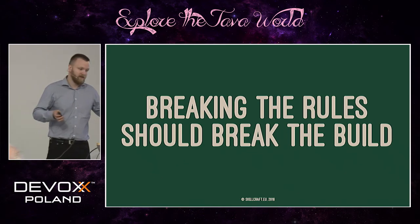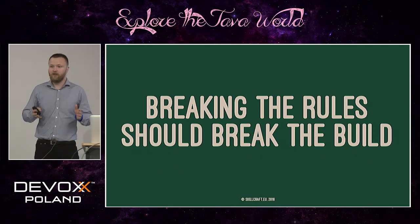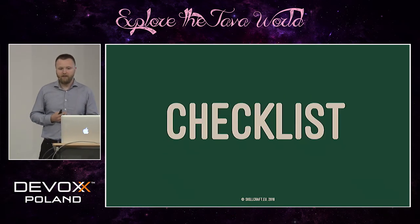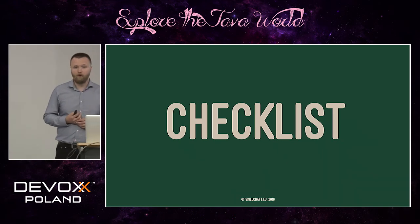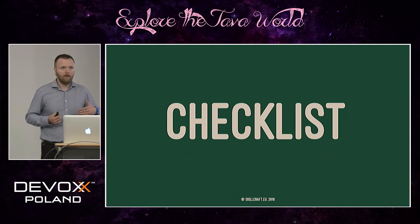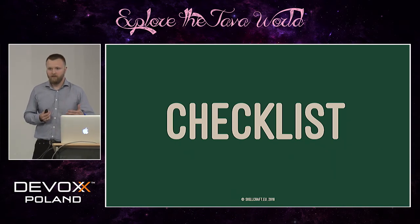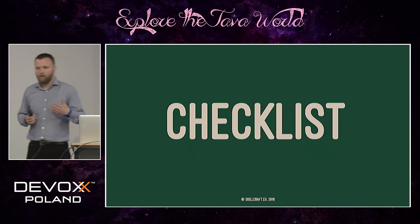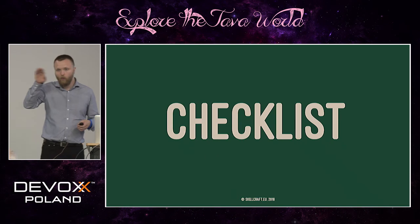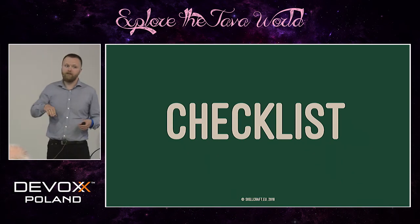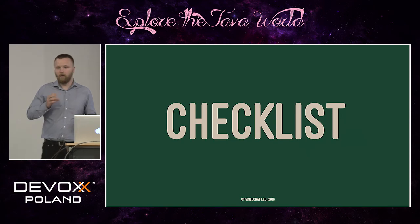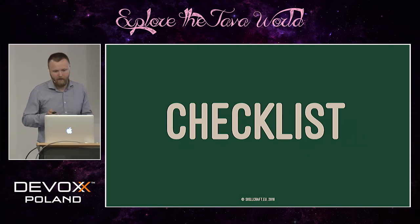Empty catch block — checked. Formatting — checked. Package dependencies with jdepend — checked. There are, of course, some things that cannot be automated, and for those we use a checklist. Why a checklist? Because we still want to articulate the expectations we have from a code review. The checklist is a point-by-point list so the reviewer knows what things to check, and the reviewee knows which things to think about when writing the code — so there are no surprises during the code review. The checklist should be minimal; most things should be automated.